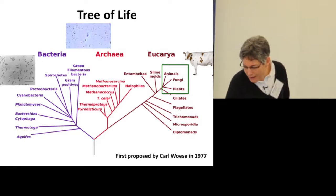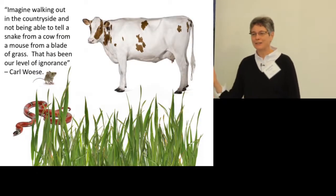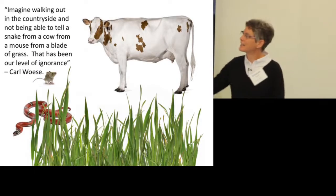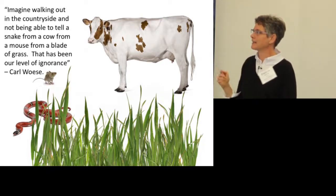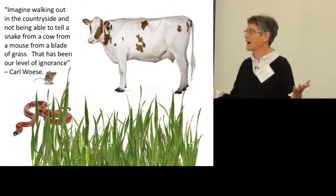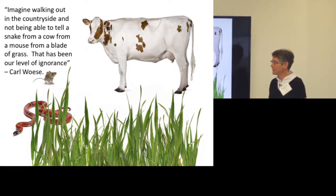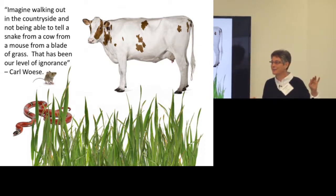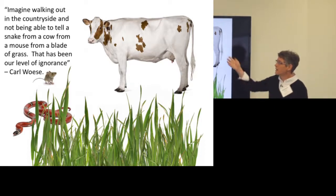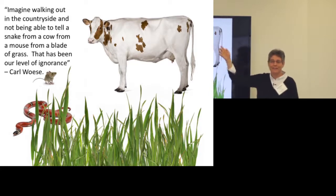There's a nice quote from Woese: imagine walking in the countryside and not being able to tell a snake from a cow, from a mouse, from a blade of grass. When you think about the microbial world and see all these tiny single-cell organisms that look about the same, you can't tell one from another — but they are far more different from each other than a cow is from a blade of grass.